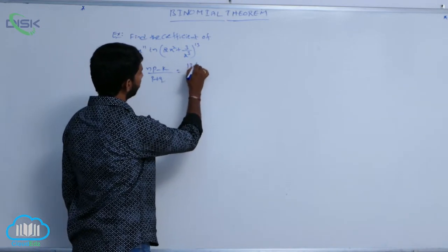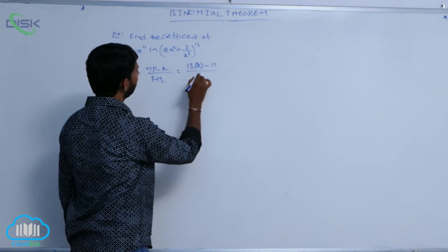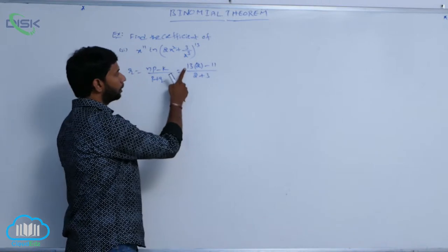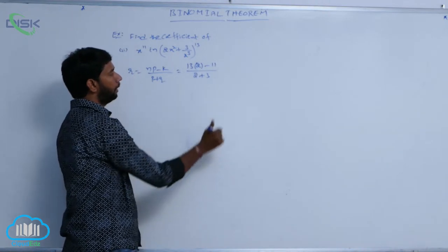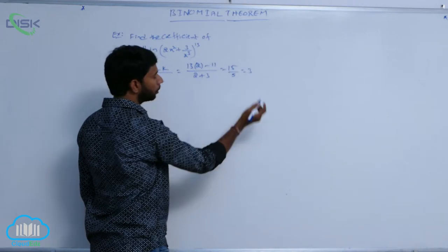Here n is equal to 13. Here p is equal to, minus k is equal to 11 by p plus q. That is 2 plus 3. Here 26 minus 11, 15 by 5. It is equal to 3.